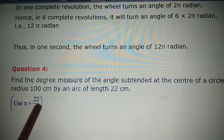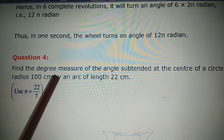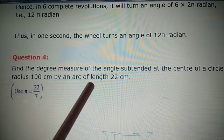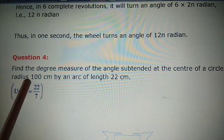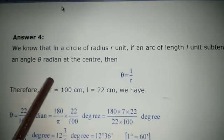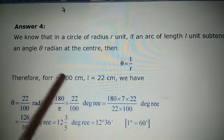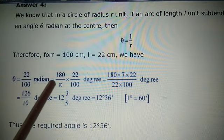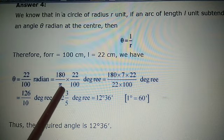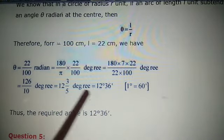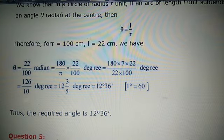Question 4: Find the degree measure of the angle subtended at the center of a circle of radius 100 cm by an arc of length 22 cm. Here R = 100 cm and L = 22 cm. Using θ = L/R = 22/100. To convert to degrees, multiply by 180/π, using π = 22/7 and simplifying, we get 12 degrees 36 seconds. Please complete this exercise. Thank you, students.